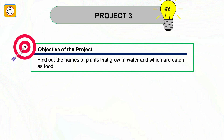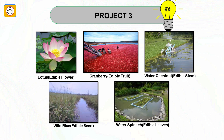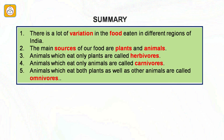Project number three: Find out the names of plants that grow in water and which are eaten as food. The plants are lotus, cranberry, water chestnut, wild rice and water spinach. This brings us to the end of this chapter. There is a lot of variation in food eaten in different regions of India. The main sources of our food are plants and animals. Animals which eat only plants are called herbivores, those which eat only animals are called carnivores, and those which eat both are called omnivores.